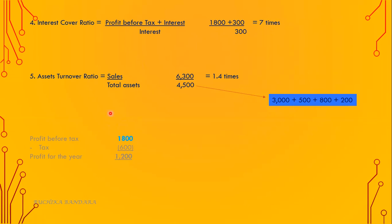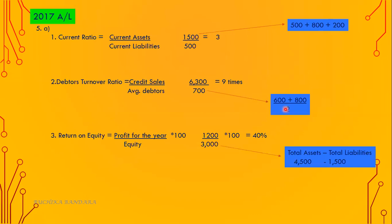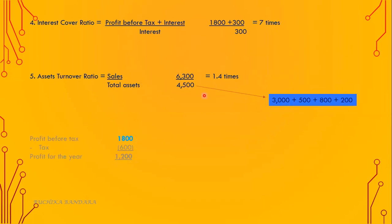Number five: asset turnover ratio equals sales over total assets. Sales are 6,300. Total assets are the addition of property, plant and equipment, inventory, trade receivables and cash. The answer is 1.4 times.